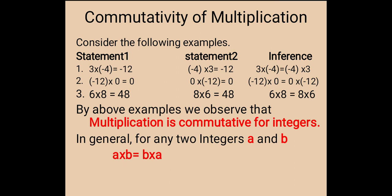Second example: minus 12 into 0 is equal to 0, and 0 into minus 12 is equal to 0. We observe that minus 12 into 0 is equal to 0 into minus 12. Third: 6 into 8 is equal to 48, and 8 into 6 is equal to 48, so 6 into 8 is equal to 8 into 6. By the above examples, we observe that multiplication is commutative for integers. In general, for any two integers a and b, a into b is equal to b into a.